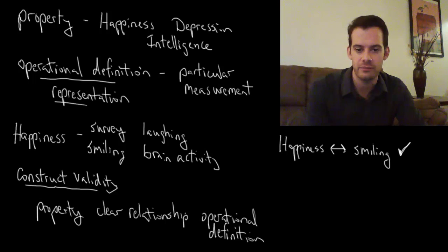There seems to be a clear relationship between this property and this definition. It's not perfect. Certainly people can be happy and not smile, and people can be smiling even though they're not actually happy. So it's not perfect, but we can say it has construct validity. It seems to have a clear relationship between these two things.